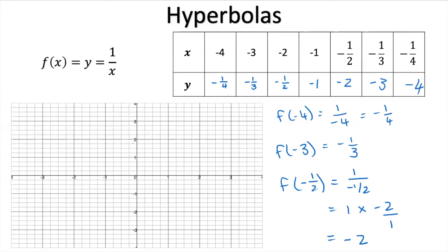Let's plot these points on our graph. Starting with x = negative 4, y = negative 1/4, then x = negative 3, negative 2, negative 1, negative 1/2, negative 1/3, and negative 1/4. It seems like we're getting a shape out of that.